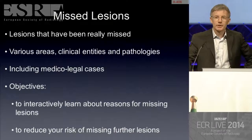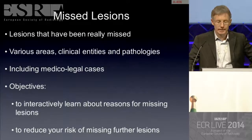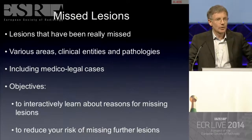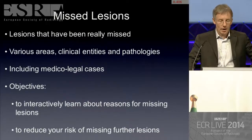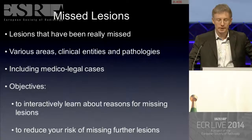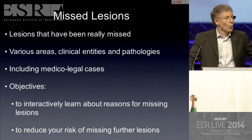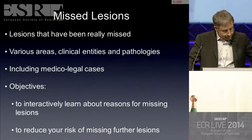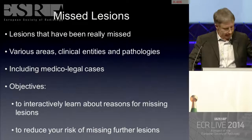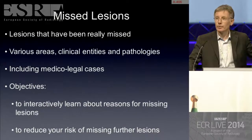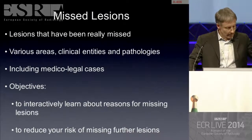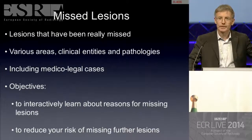We will show you missed lesions this afternoon that have really been missed. We will look at various anatomical areas, clinical entities and pathologies. We will include medical legal cases and our objectives are to interactively learn about the reasons for missing lesions and to help you reduce your risk of missing further lesions. We will concentrate on the chest x-ray but will also show several cases of missed lesions on CT scans. The chest x-ray remains one of the most frequent causes of malpractice issues.